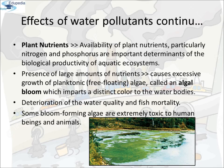Plant Nutrients: The availability of plant nutrients, particularly nitrogen and phosphorus, are very important determinants of the biological productivity of aquatic ecosystems. The presence of large amounts of nutrients in water also causes excessive phytoplanktonic growth — that is, free-floating algae called algal bloom — which imparts a distinct color to the water bodies. Algal blooms cause deterioration of water quality and fish mortality. Some bloom-forming algae are extremely toxic to human beings and animals. This picture shows algal bloom.